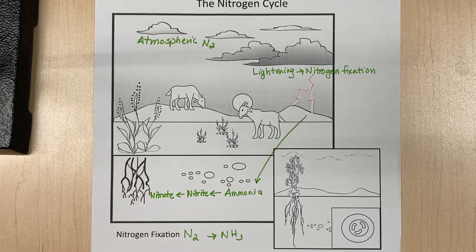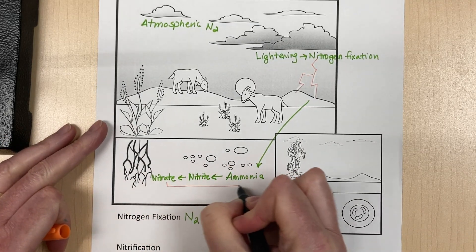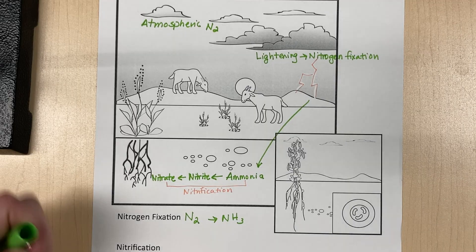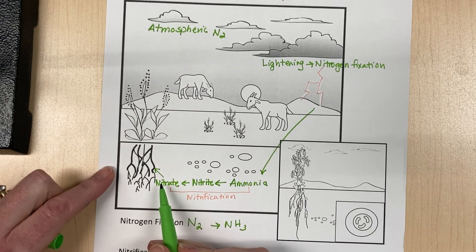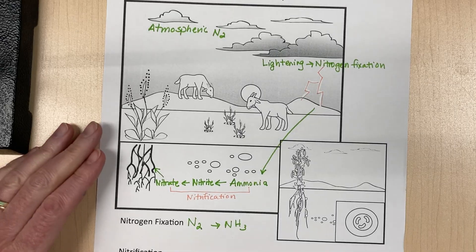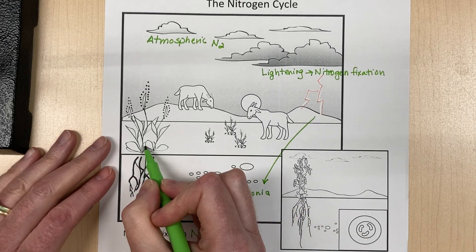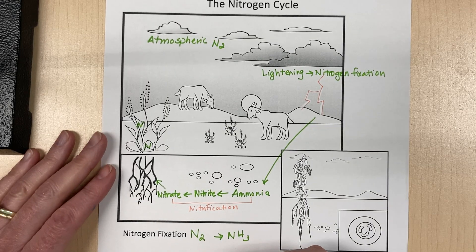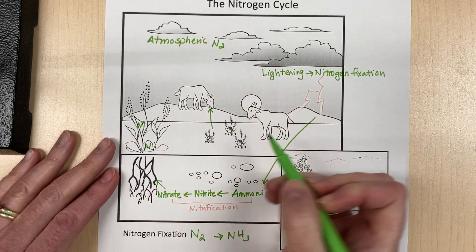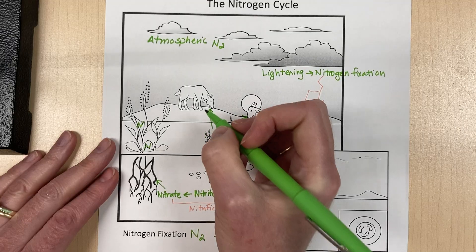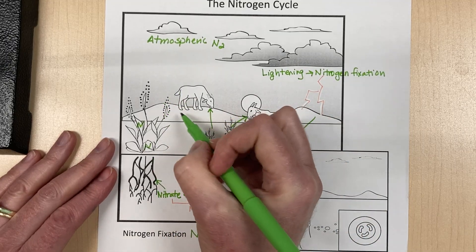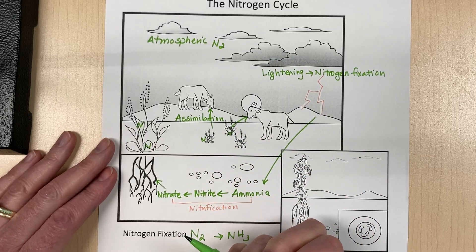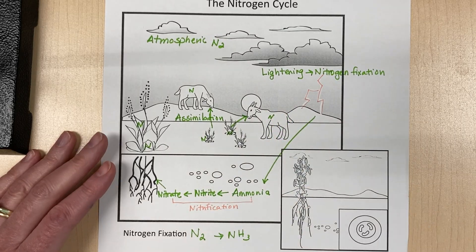This whole process of ammonia converting to nitrites and then nitrates is called nitrification. These nitrates get absorbed by the plant, and they use the nitrogen for green leafy growth. So now we have our nitrogen traveling in our plant. Then, as animals, we eat the nitrogen, and this process of eating nitrogen is called assimilation. It's also where plants take it up through their roots from the soil.